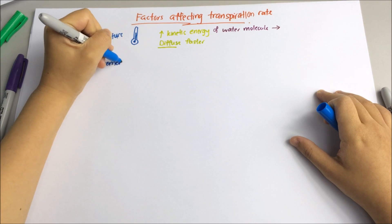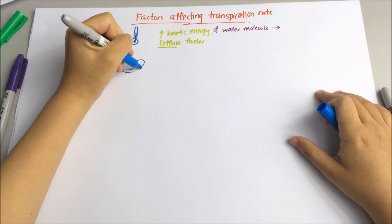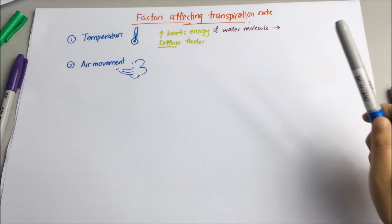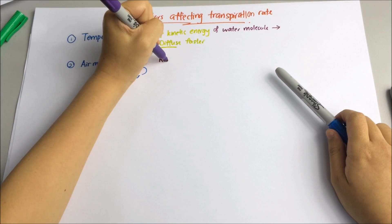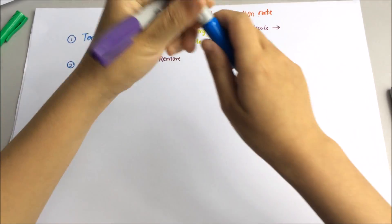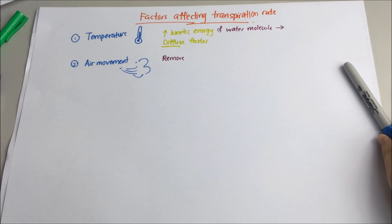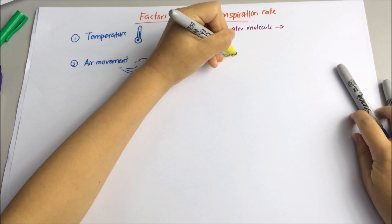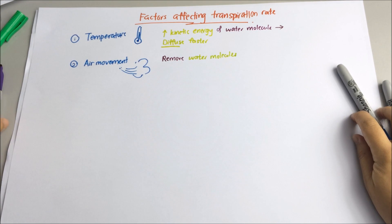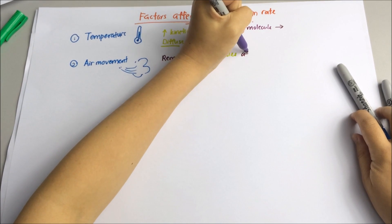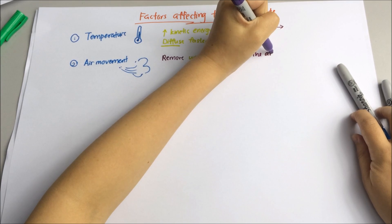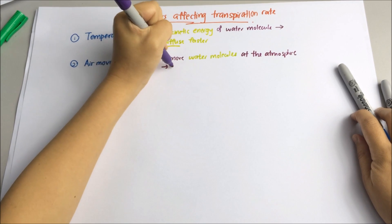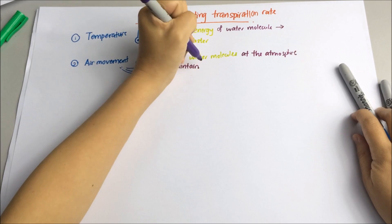The second factor that will affect the transpiration rate will be air movement. During transpiration, the water vapour that diffuses through the stomata will accumulate near the leaf surface. Faster air movement, which is the wind, will help to remove the water vapour outside the leaf surface. Hence, the concentration of water vapour outside the leaf will be low, and this will create a steep concentration gradient between the water vapour in the leaf and outside the leaf.